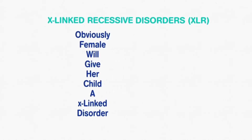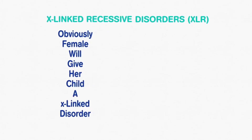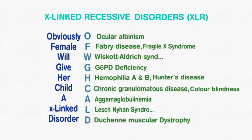For X-Linked Recessive Disorders, the mnemonic is 'obviously female will give her child an X-Linked Disorder', which stands for Ocular Albinism, Fabry Disease, Fragile X Syndrome, Wiskott-Aldrich Syndrome, G6PD Deficiency, Hemophilia A and B, and Hunter's Disease.